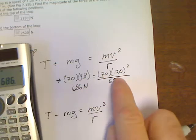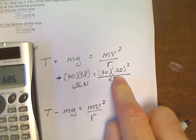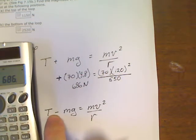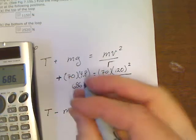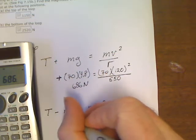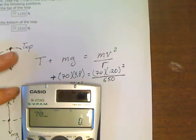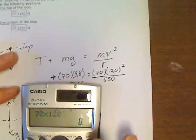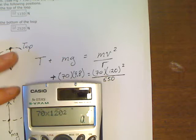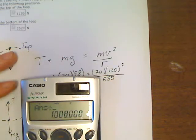So mg is 686. We're going to end up subtracting from 686 up here. And when we work it out down here, we're going to end up adding that 686 to the other side. So let's see what our two answers are.